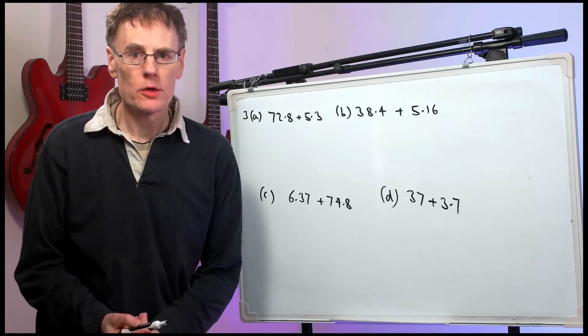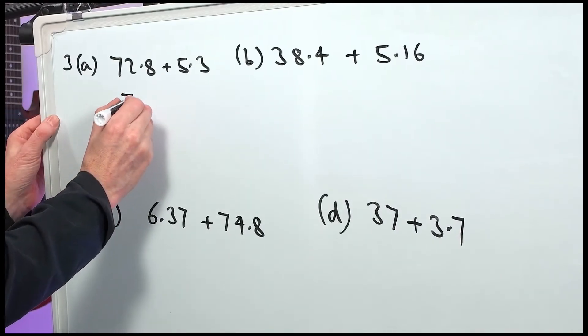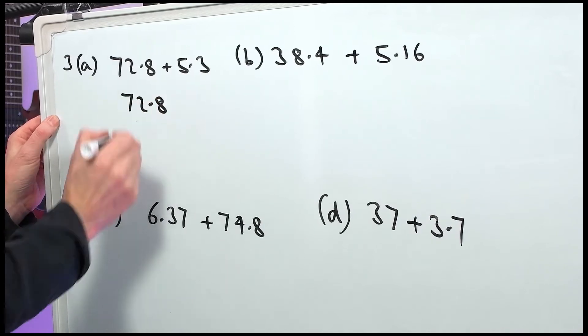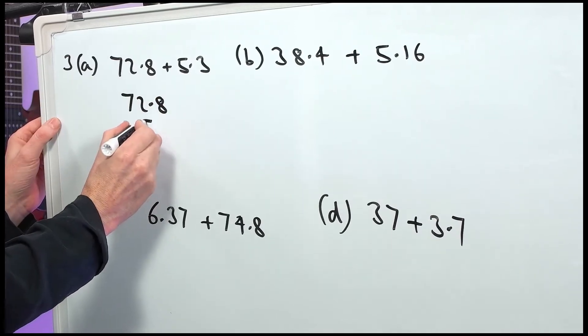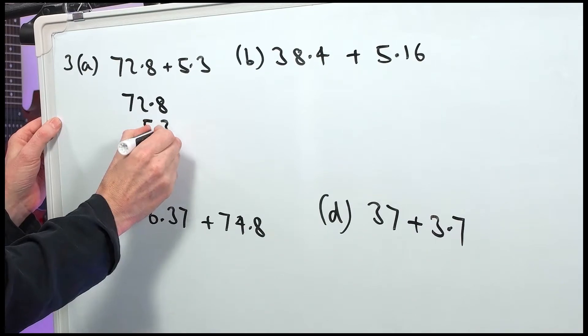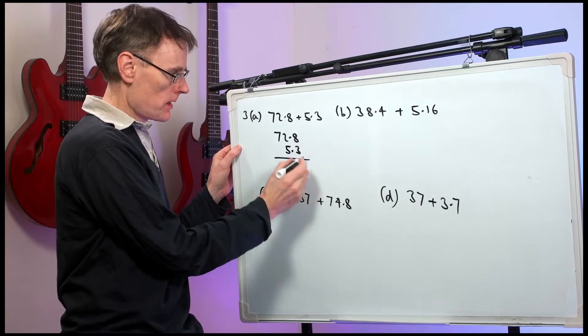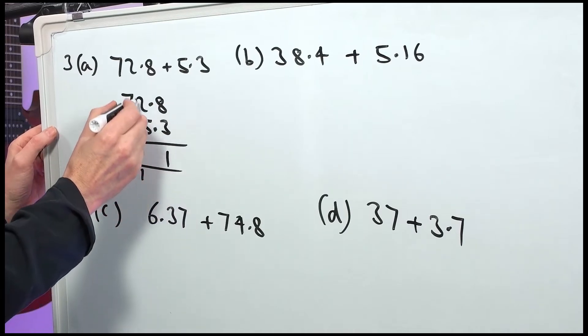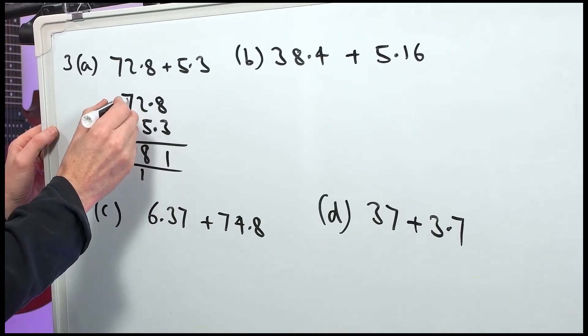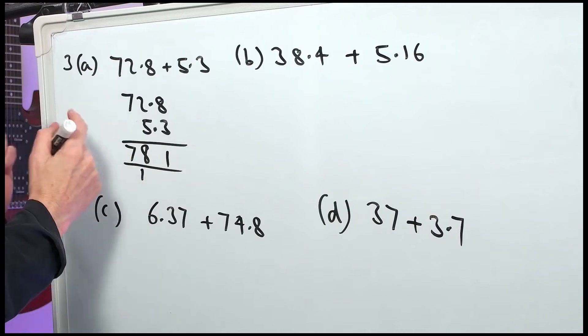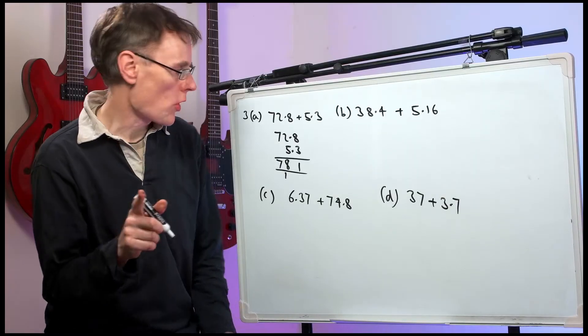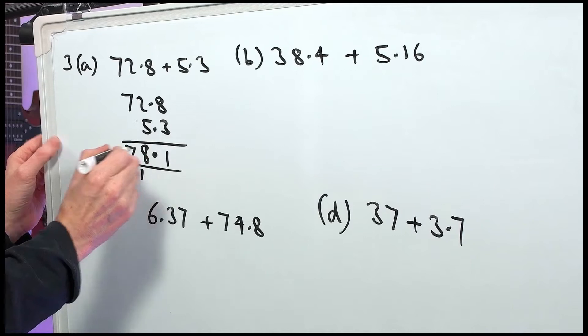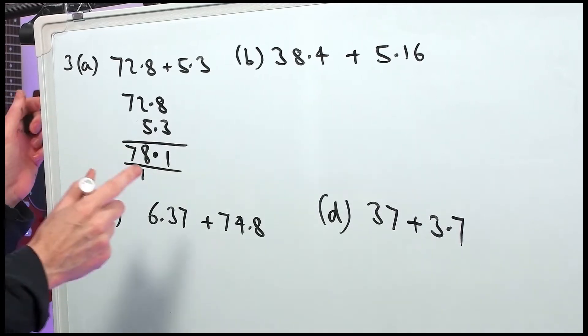Now, number 3, we've got some adding decimals. So part A, we have 72.8 plus 5.3. We must line them up in the correct columns. So 8, 9, 10, 11. 5, 6, 7, 8. 7 plus nothing is 7. 78.1 is wrong. Decimal point lines up. It's 78.1.